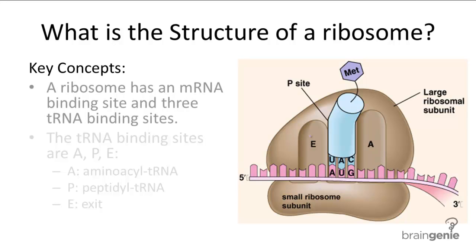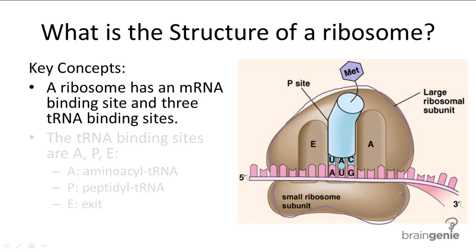The structure of ribosomes fits its function. A ribosome is made of two subunits: the large ribosomal subunit and the small ribosomal subunit. The mRNA will thread its way between these two subunits, waiting to be matched up with the anticodons on tRNA.